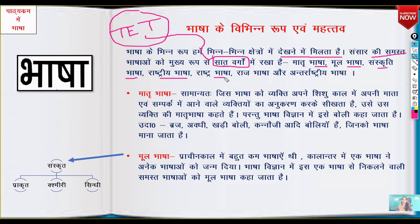The types of language we will cover are: Rashti bhaasa (regional language), Raj bhaasa (official language), and last is Antaraashti bhaasa (international language).